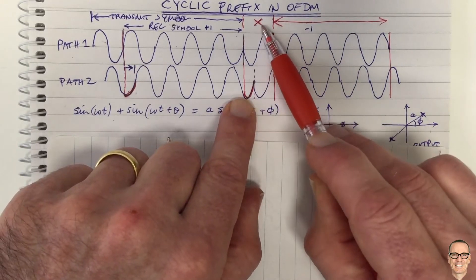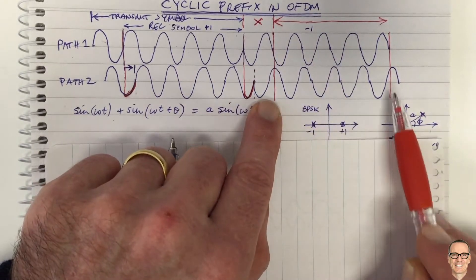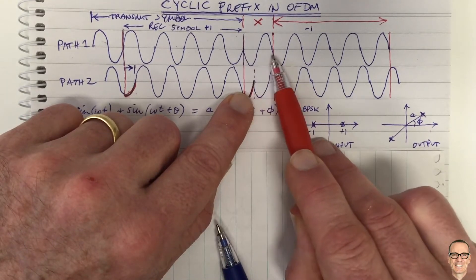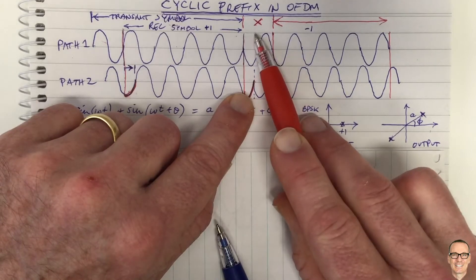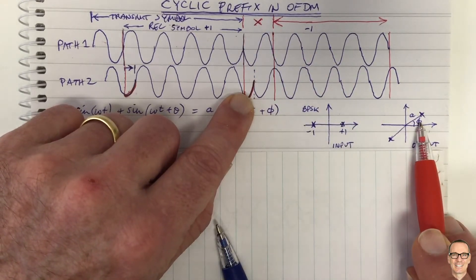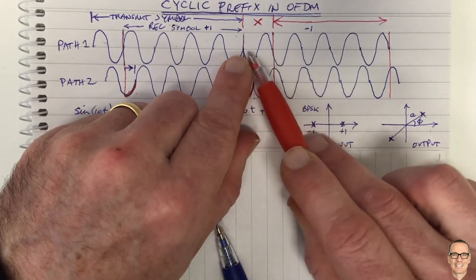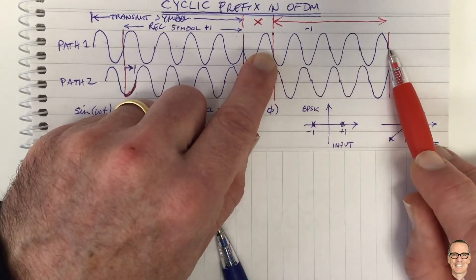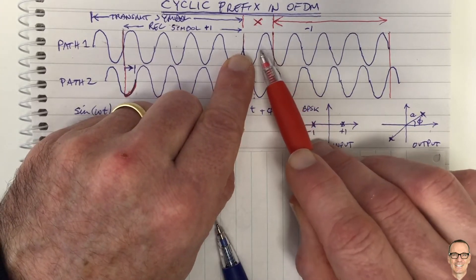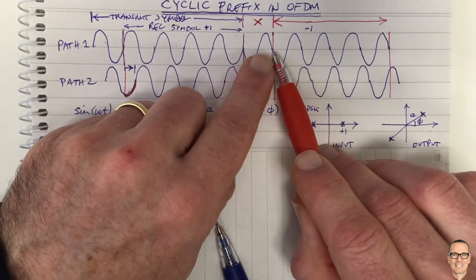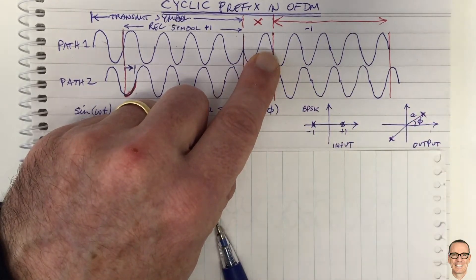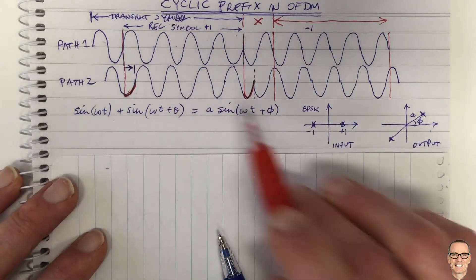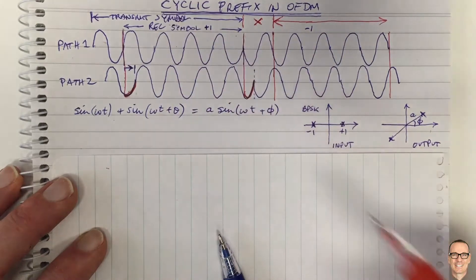The advantage of this extension — by one cycle or any integer number of cycles — is that within the receive window you have exact addition of sinusoids with no discontinuity; the discontinuity happens only in the discarded portion. You pay a penalty: loss of energy and time spent sending the prefix which you then discard. But the benefit is worth it as long as the cyclic prefix is short relative to the symbol length. One trade-off: a longer symbol means more time for the channel to change, introducing a time-varying channel.